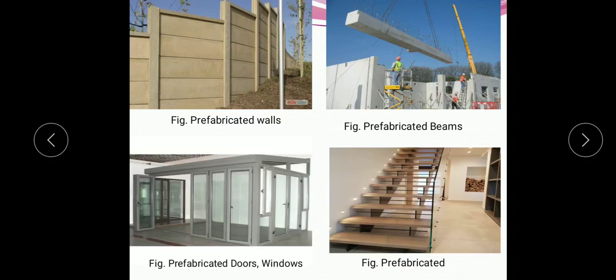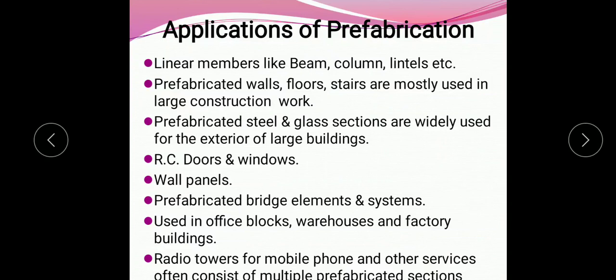The next picture shows prefabricated doors and windows, which are prefabricated and assembled as per the requirement on the construction site. The next photo is of a prefabricated staircase, which can be directly placed on the construction site.